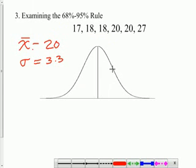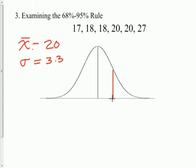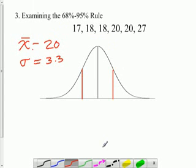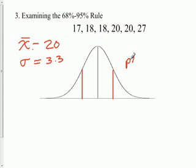This is concave down, getting steeper, steeper, steeper, and at the point where the line starts getting shallower, about right in here is where we draw our vertical line. We're going to draw one on the other side as well at that point. That point is called the point of inflection.